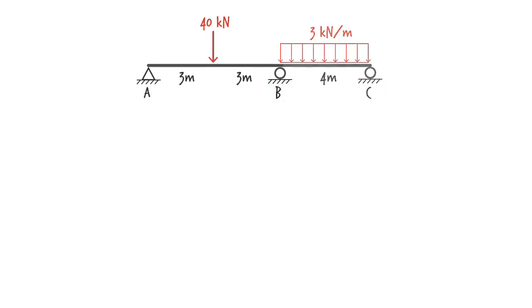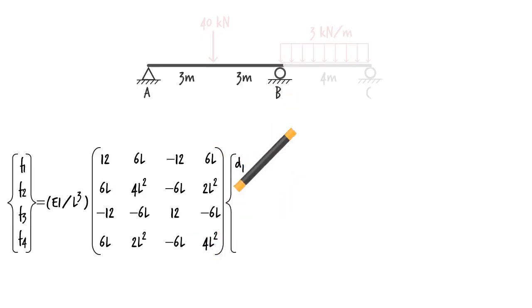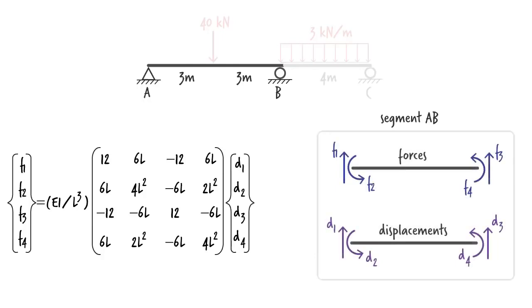For segment AB, if the concentrated load was not present, we would have expressed the relationship between member end forces and displacements as described below. Here, F1 is the shear force and F2 the bending moment at the left end of the segment, F3 is the shear force, and F4 the bending moment at the right end of the segment.